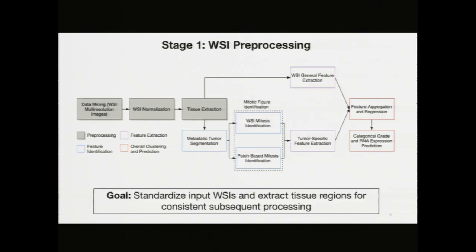The first stage of my pipeline was for whole slide image pre-processing — we'll abbreviate whole slide image to WSI for the rest of this presentation. The goal of this stage was to standardize input whole slide images and extract tissue regions for consistent subsequent processing. This is primarily because the data sets I used consisted of images from four international pathology centers, and the staining methods, although they used the same chemicals, normally resulted in different color variations that made machine learning models especially difficult to apply.